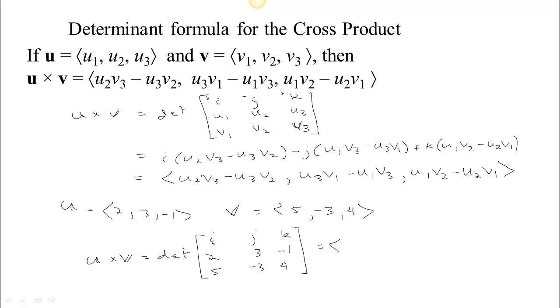So we get for i, 12 minus 3 would be 9, for j, we have to remember this in a negative position, we have 8, minus, minus 5, 8 plus 5 is 13, but j is in a negative position, so that's negative 13, and k, we have negative 6 minus 15, that's negative 21. So we got the same answer as before by using this determinant formula.